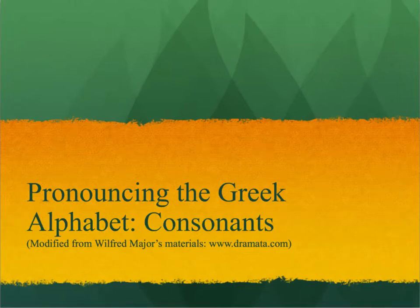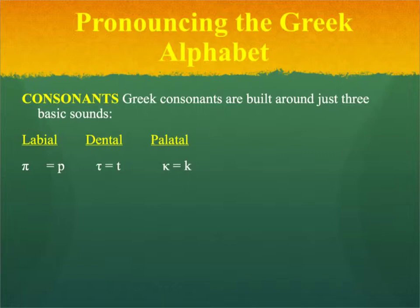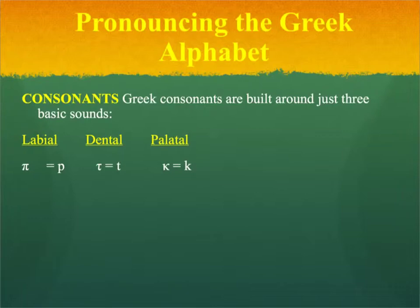In this video, you'll learn how to pronounce the 17 consonants of the ancient Greek alphabet. Rather than going through the consonants in the order they appear in the alphabet, I'm instead going to introduce them based on three groupings based on where in your mouth the sound originates. These are called labial for consonants pronounced mainly on your lips, dental for those pronounced around your teeth, and palatal for those pronounced further back in your mouth.